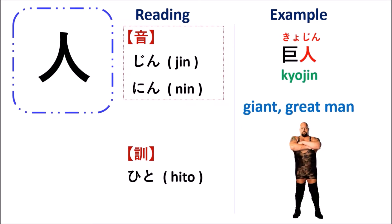The next word is kyojin. Kyojin means 'giant' or 'great man.' The first kanji kyo means 'big' or 'giant,' and the second kanji jin means 'people.' When you put 'big' and 'people' together, that means a big or great person — so we translate it as 'giant' or 'great man.'